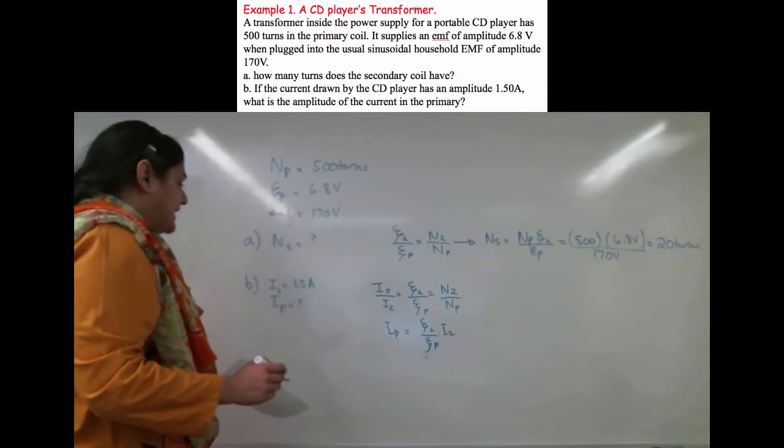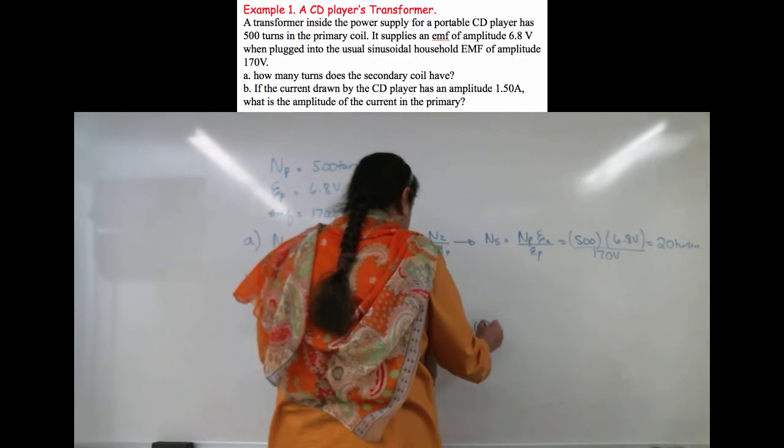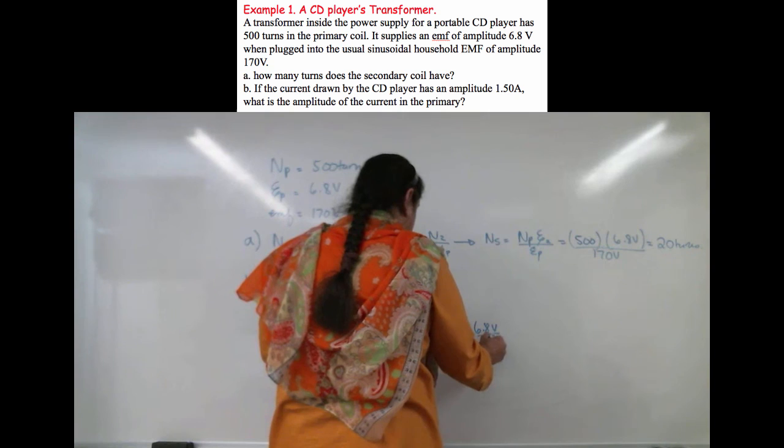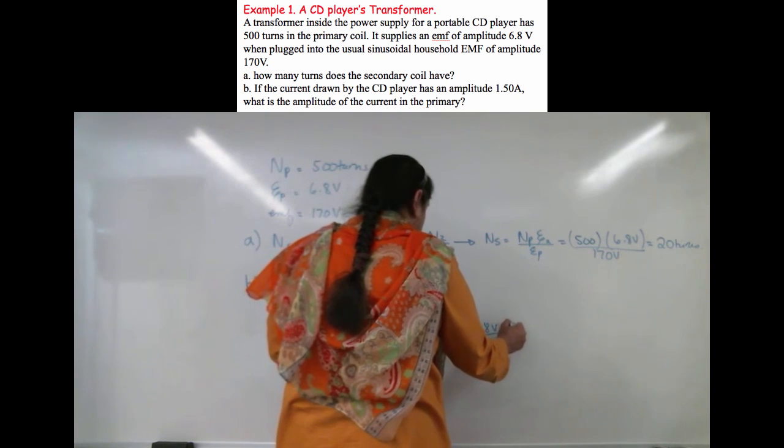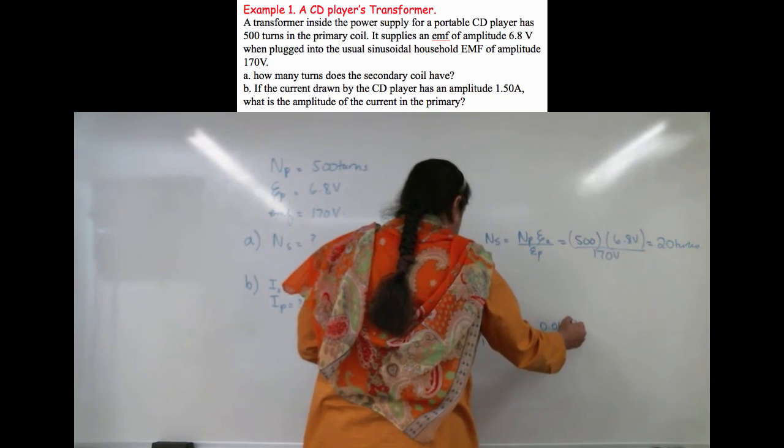Given that I2 is 1.5, I can plug numbers in and I get 6.8 volts divided by 170 volts times 1.5 amps. It gives me 0.060 amps. And that is the current in the primary.